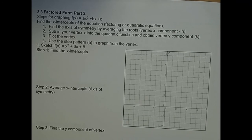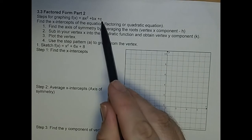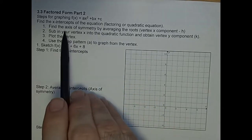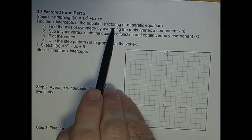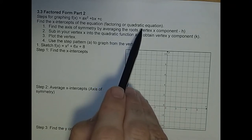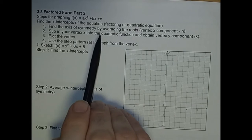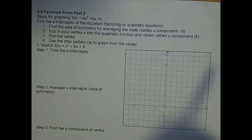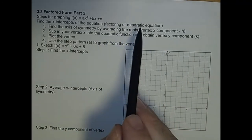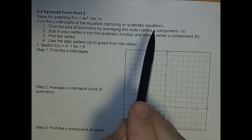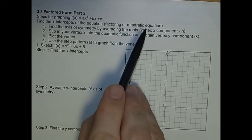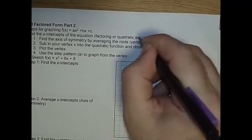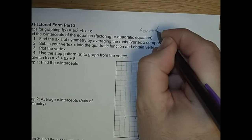So the steps are for graphing ax squared plus bx plus c — that's standard form — and we're going to turn that into roots form, or x-intercepts form. Step one: find the x-intercepts of the equation. You have two choices: either factor, or use the quadratic formula. I will factor, but I'll also show how to use the quadratic formula on the side. If you didn't learn how to factor, I hope you know the quadratic formula.